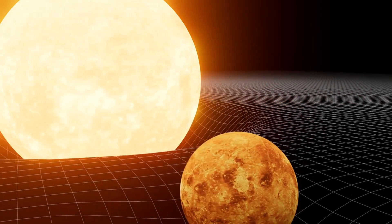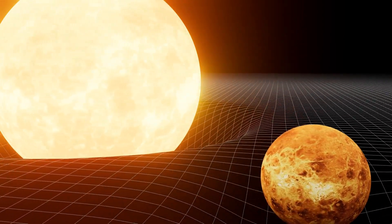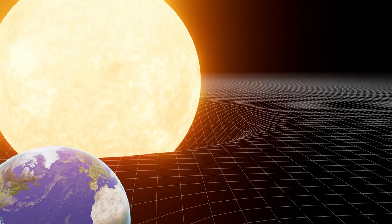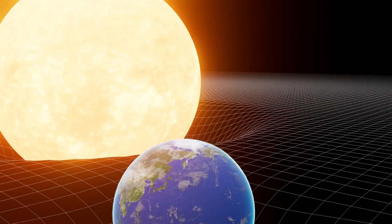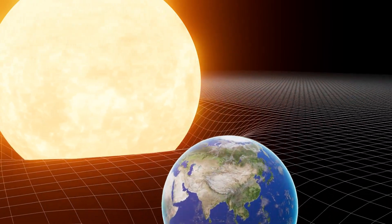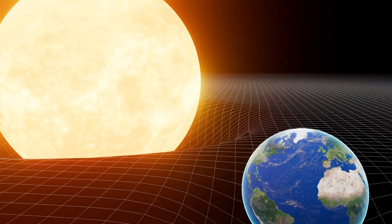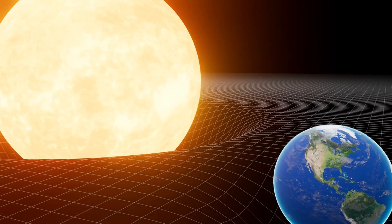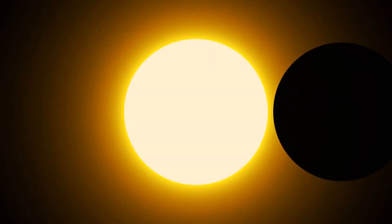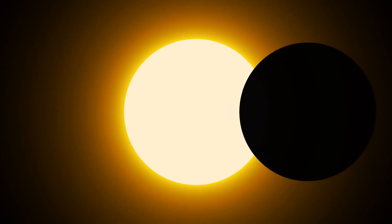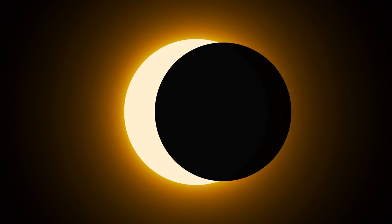Despite being much smaller, the moon is also much closer to earth, about 400 times closer. This alignment allows the moon to perfectly cover the sun, creating a breathtaking spectacle for us on earth. Scientists and astronomers have diligently studied and predicted eclipses for many years, using precise calculations and observations. Thanks to their efforts, we can accurately determine when and where an eclipse will happen, giving us the opportunity to witness this amazing event.